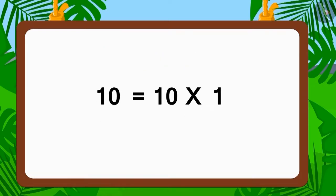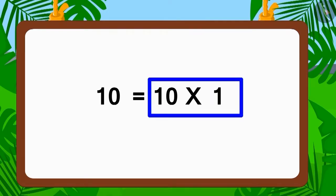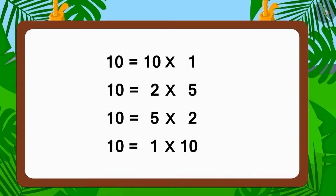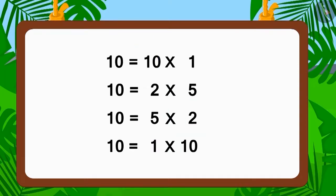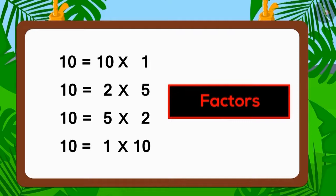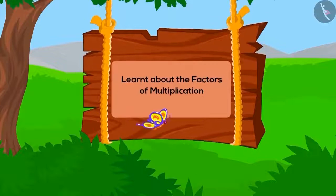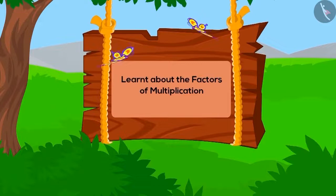This is how we can write any number as a multiplication of two numbers. The two numbers that form part of the multiplication are known as factors. Here, one, two, five, and ten are factors of ten. In this lesson we learned about factors of multiplication. In the next two lessons we will see some interesting examples of the same.